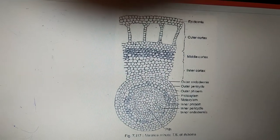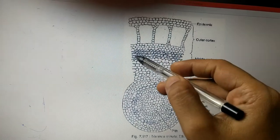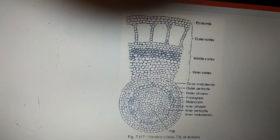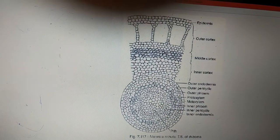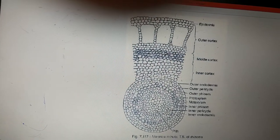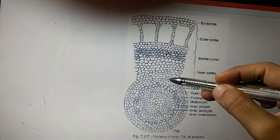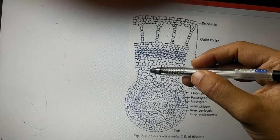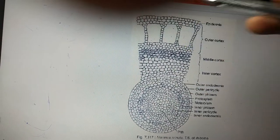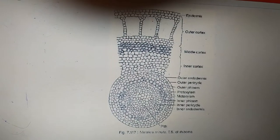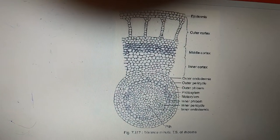The middle cortex is made up of sclerenchymatous cells, while the inner cortex is compactly arranged with parenchymatous cells. These air chambers are absent in case of xerophytic species like Herostar Rajasthanensis and Egyptiaca.